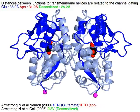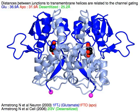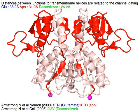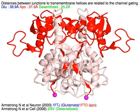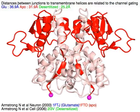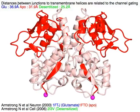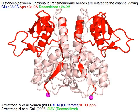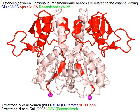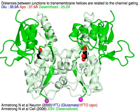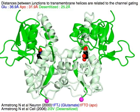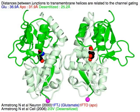When active with glutamate, the distance is 36.9 angstroms. At the inactive APO state without ligands, the distance is smaller at 31.9 angstroms. At the inactive desensitized state with glutamate, the distance is even smaller at 25.2 angstroms.